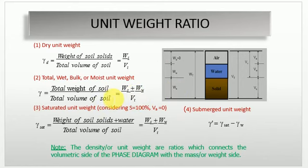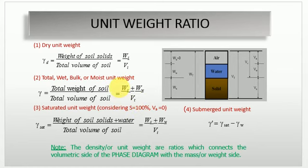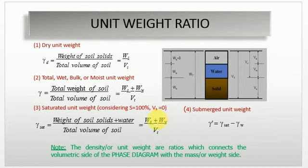If you put total weight of soil sample as Wa + Ww + Ws, the value of Wa equals zero so it becomes (Ws + Ww) / Vt. Third is saturated unit weight, where S = 100 percent and volume of air equals zero — the saturated two-phase system. Gamma saturated is the ratio of weight of soil solids plus water divided by total volume: γsat = (Ws + Ww) / Vt.